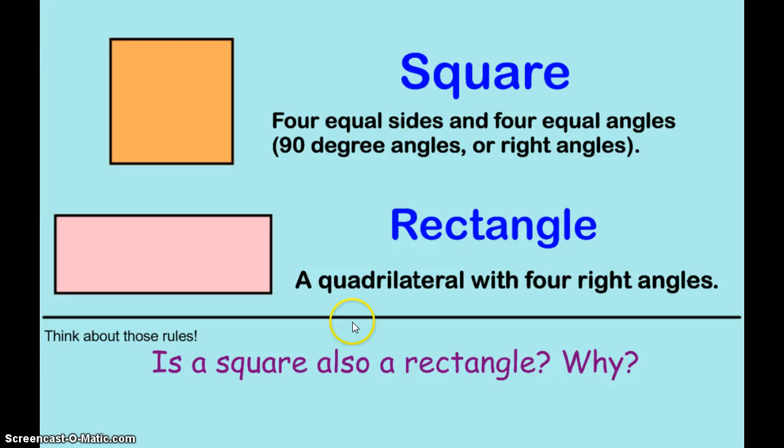Okay. One thing that can get confusing is where square and rectangle overlap, where these rules kind of overlap. So a square has to have 4 equal sides and 4 equal angles. A rectangle has to have 4 right angles and 2 that are parallel.